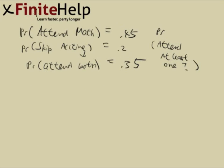A Venn diagram would be the easiest way to figure this out. It's important on this particular problem to note that this is attend math and this is skip accounting, so it will be helpful to unify them. I'm going to make it attend accounting.